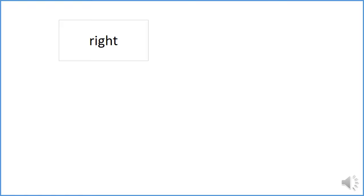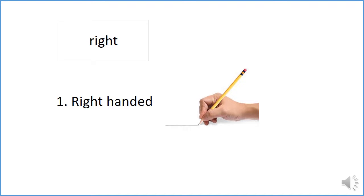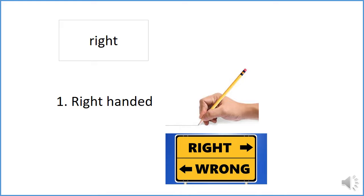We're going to talk about 'right.' First, let's look at the English. As you can guess, when we say right-handed person, the right side — right and left, right side. And between right and wrong, to be right.